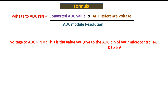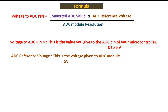The voltage to the ADC pin means the voltage we will give to the ADC pin of the PIC. In our case, we will be using a potentiometer and I will give 5 volts to it. This means the maximum the potentiometer can output is 5 volts, and the minimum is 0 volts, depending upon the rotation. In between, it will be variable.